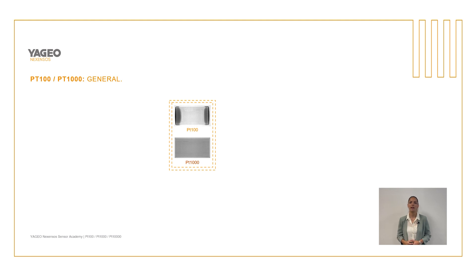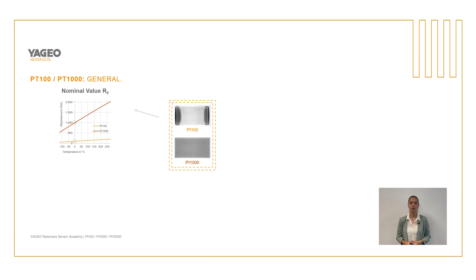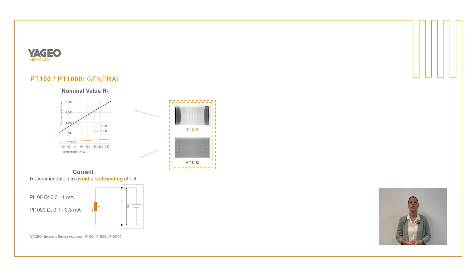On this slide we see a general comparison of the resistance values. The resistance at zero degrees Celsius for the PT10000 is 10 times higher compared to the PT100. To prevent a self-heating effect, the PT100 can be supplied with a higher current than the PT1000. We recommend a measuring current of 0.3 to 1 milliampere for the PT100 and 0.1 to 0.3 milliampere for the PT1000.